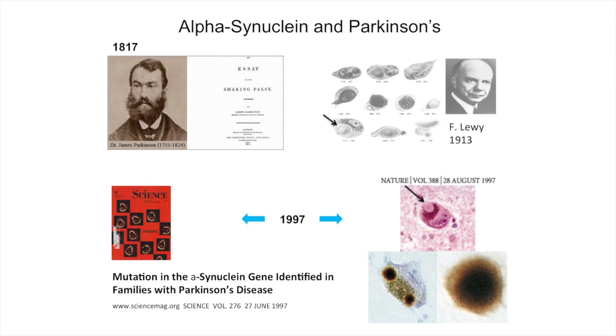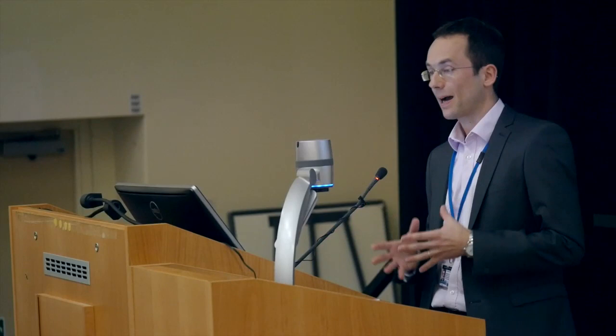The second thing that happened was that it was established that the pathological hallmark lesion — the signature lesion of Parkinson's — which was called the Lewy body after the discoverer Frederick Lewy, decades before, was actually made up of tightly packaged clumps of misfolded alpha-synuclein. So here was the possibility of having a marker to make a definitive diagnosis, which was quite easy with histological techniques in the examination of the post-mortem brain.